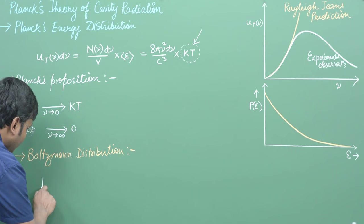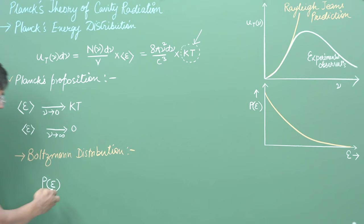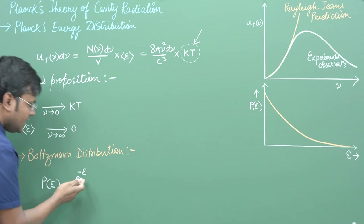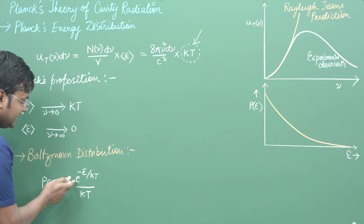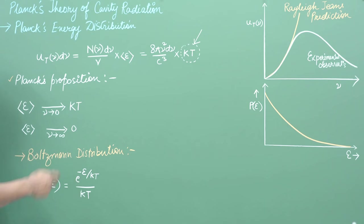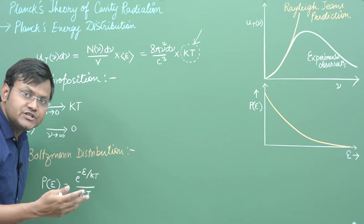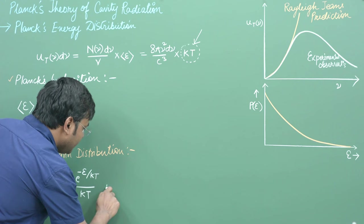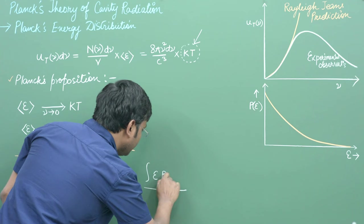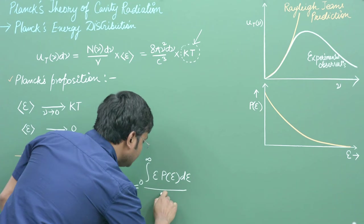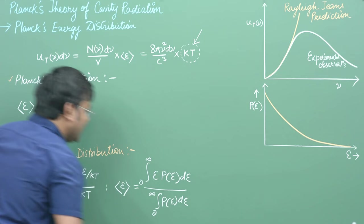The mathematical expression for the Boltzmann distribution is: P(ε) = e^(−ε/kT), where T is temperature, k is Boltzmann's constant, and ε is the energy of the particle. Based on this, to calculate the average energy of all gas molecules in one direction, the average energy equals the integral of ε·P(ε)dε from 0 to infinity, divided by the integral of P(ε)dε from 0 to infinity.